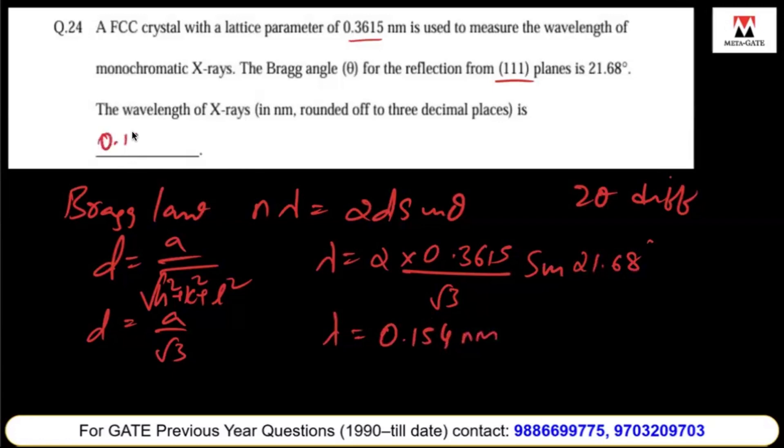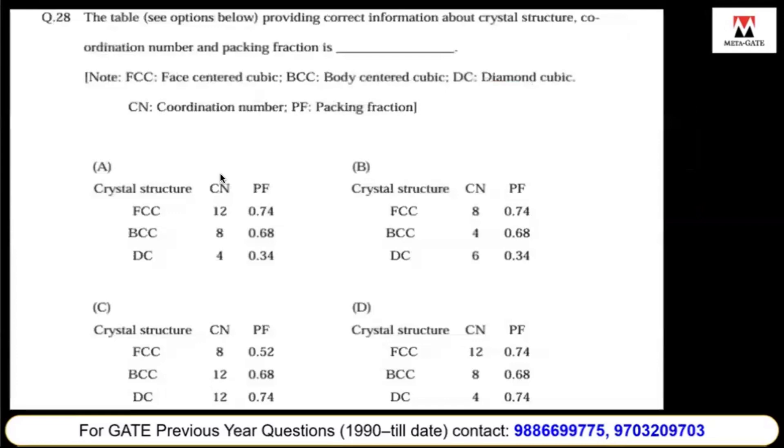The table providing correct information about crystal structure, coordination number, and packing fraction. We know for FCC, which is a close-packed structure, the packing fraction is 0.74. BCC has a packing fraction of 0.68, and diamond cubic has a packing fraction of 0.34.